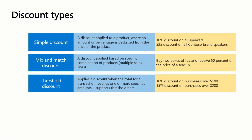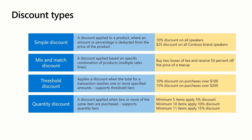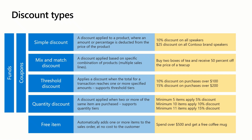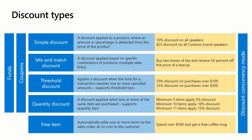Threshold discounts provide a means to apply a discount based on a minimum spend — for example, 10% discount on purchases over $100. Quantity discounts allow for discounts based on minimum quantities — for example, minimum 5 items applies a 5% discount. Free items will automatically add one or more items to the sales order at no cost to the customer — for example, spend over $500 and get a free coffee mug. Coupons are codes linked to discounts and used to add discounts to transactions. Fund is the collection of discount amounts when any discount is applied that gets deducted from the discount fund. And discount concurrency mode decides which discounts compete on a transaction and which discounts can be compounded.